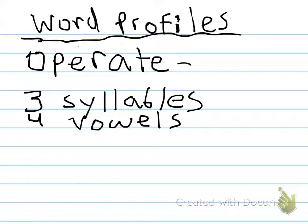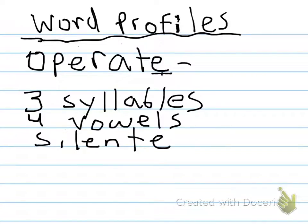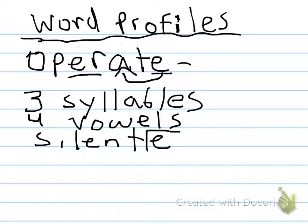Are there any silent vowels? I would say the E is silent here. We know that the E does a job — it's actually making the A long — but we can't actually hear it. You might think the E here is silent, and that's up to interpretation. I prefer to think of it as making an R sound. You could think of that as a silent E, but I don't really. Overall, there are seven letters.